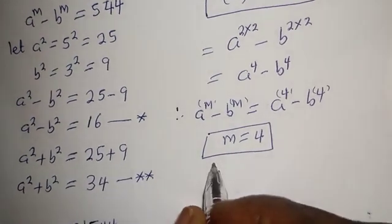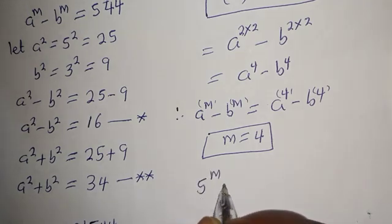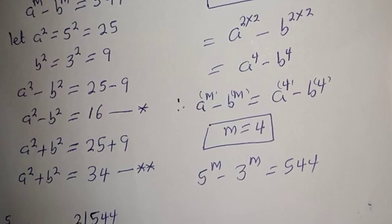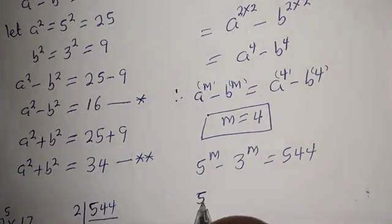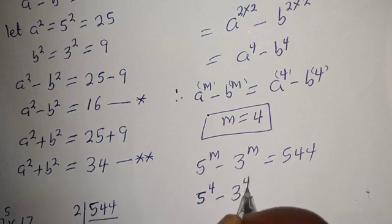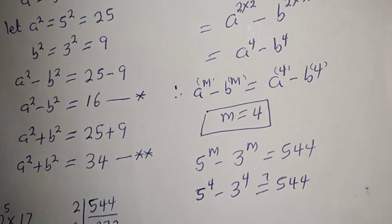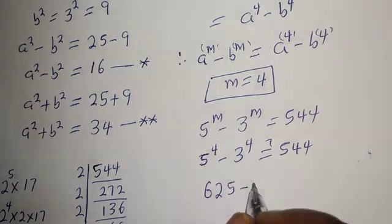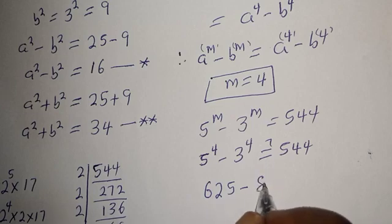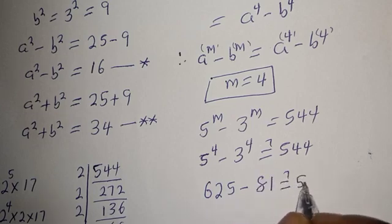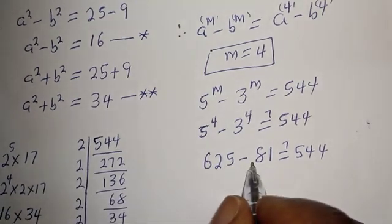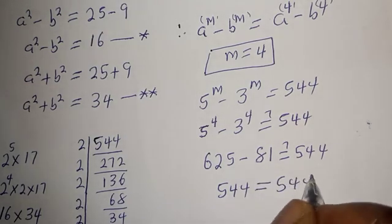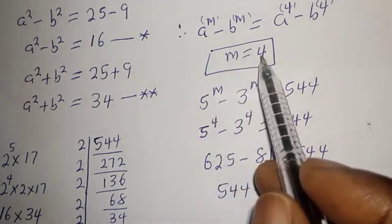Let's confirm: 5 raised to power m minus 3 raised to power m equals 544. When m equals 4, we have 5 raised to the power 4 minus 3 raised to the power 4, which must equal 544. Now 5 to the fourth is 625 and 3 to the fourth is 81, so 625 minus 81 equals 544, which satisfies the given equation at m equals 4.